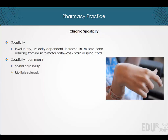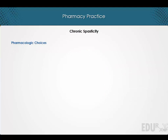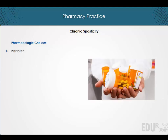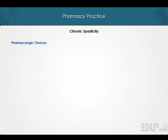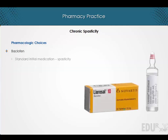With reference to the various pharmacologic choices in the management of chronic spasticity, we shall discuss baclofen, tizanidine, the benzodiazepines such as diazepam and clonazepam, gabapentin, and dantrolene.